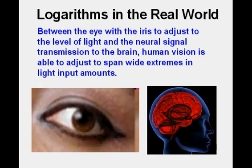Between the eye with the iris to adjust the level of light and the neural signal transmission of the brain, human vision is able to adjust to span wide extremes in light input amounts.